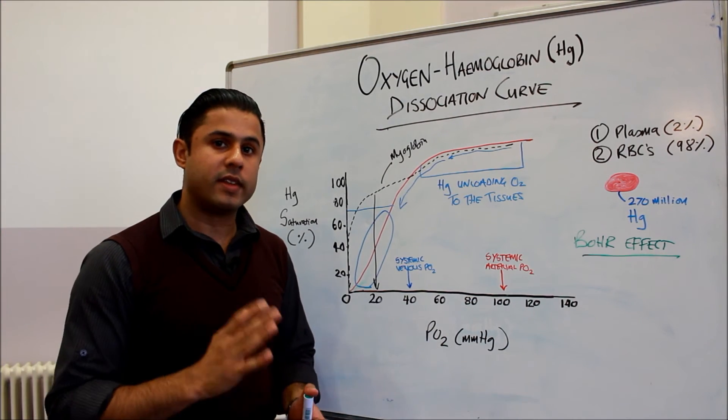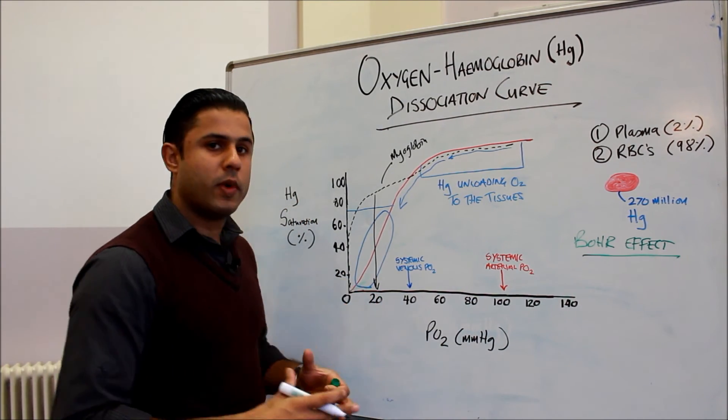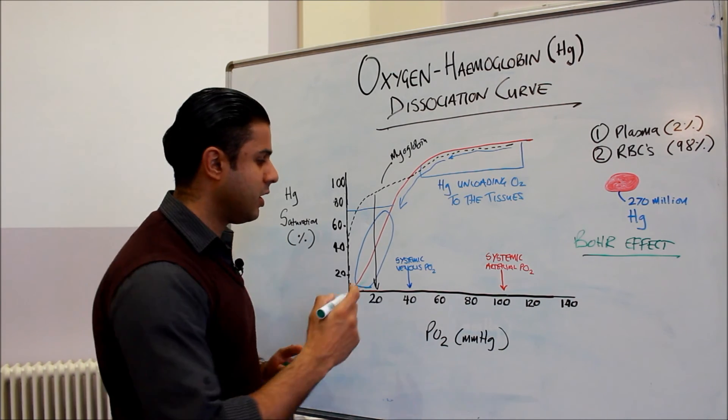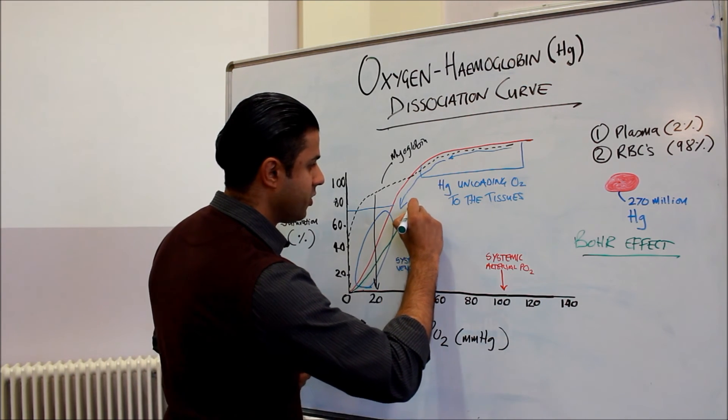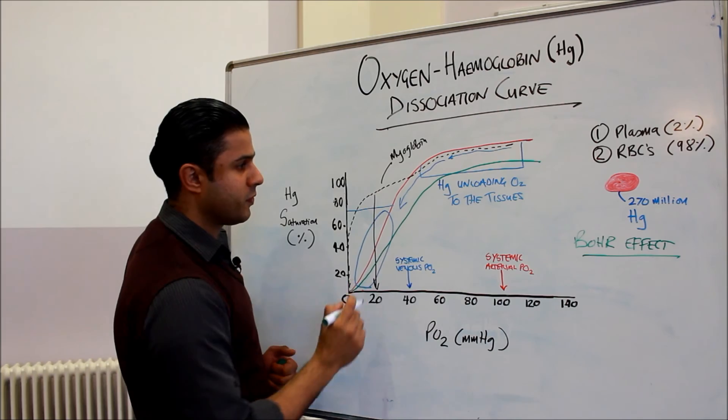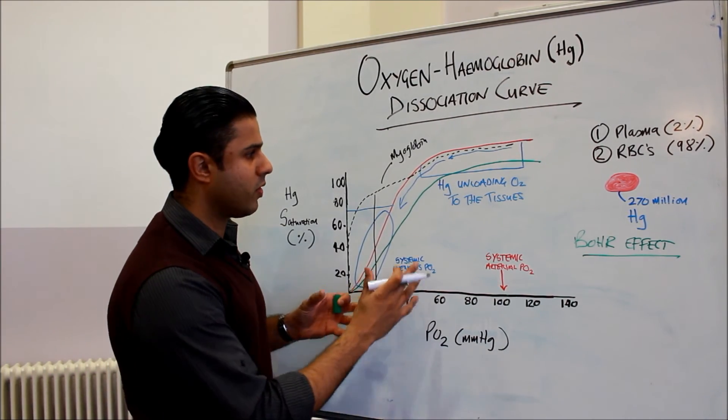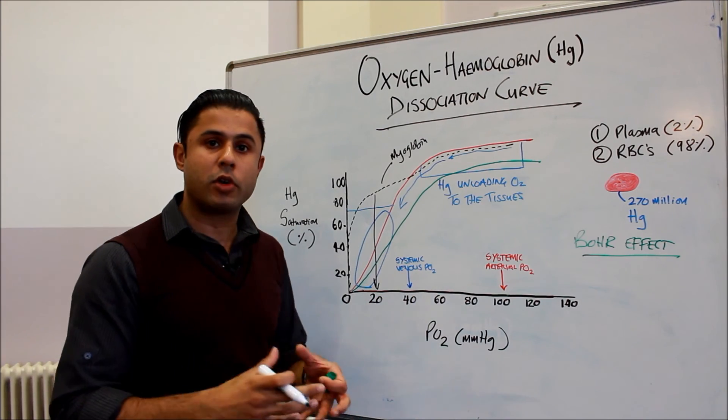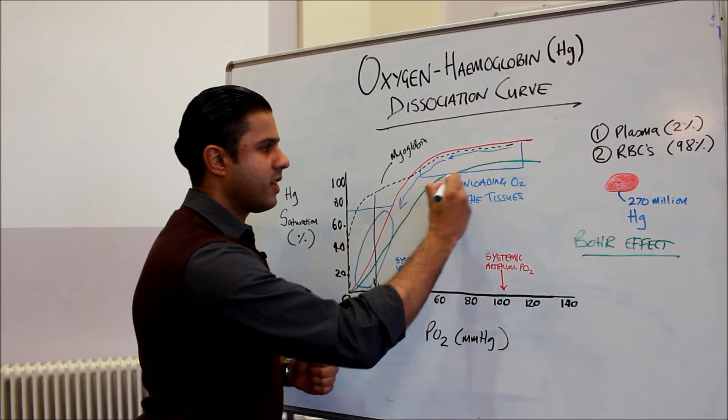Now why does that happen? So we can draw this out. When you're exercising, as you increase the amount of CO2, the oxygen hemoglobin dissociation curve shifts to the right. So we've seen it move to the right. What does that mean? It means for a given pressure of oxygen, the hemoglobin is unloading that oxygen much earlier.